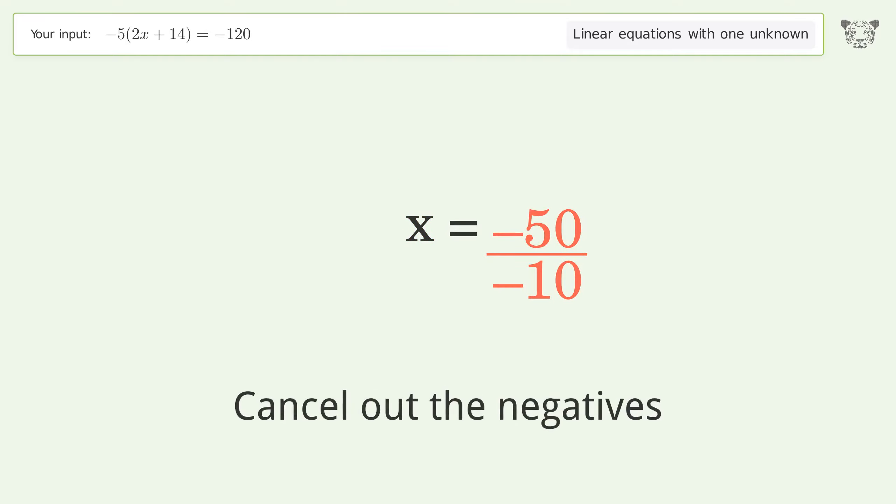Find the greatest common factor of the numerator and denominator. Factor out and cancel the greatest common factor. And so the final result is x equals 5.